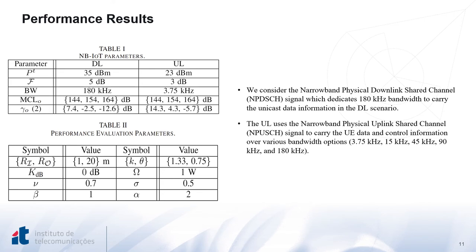Regarding the simulation results used to validate our model, we considered two signals. The first is the narrowband physical downlink shared channel, which dedicates 180 kHz bandwidth to carry the UE data information in the downlink scenario. In the uplink, we adopted the narrowband physical uplink shared channel, which carries user equipment data and control information over various bandwidth options, where we consider 3.75 kHz bandwidth for control information. The NB-IoT parameters are shown in Table 1, while the performance evaluation parameters including the channel model and network scenario are shown in Table 2.